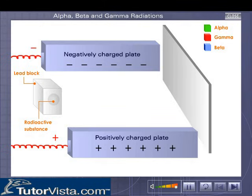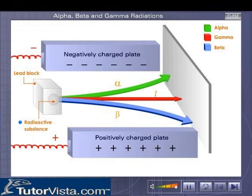Here, one can observe the emission of the three major types of rays emanating from a radioactive substance placed inside a lead block. These three rays get deflected in different directions in an electrostatic field. The rays that get deflected towards the negatively charged plate are called alpha rays, while those that deflect towards the positively charged plate are called beta rays. The rays that travel straight without deflection are called gamma rays.